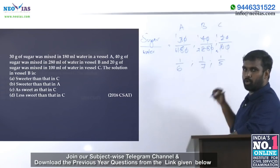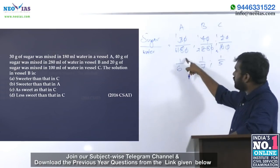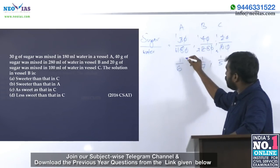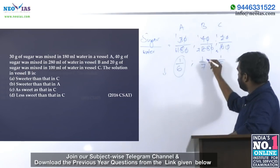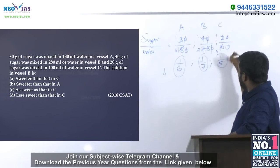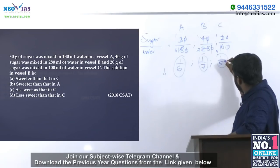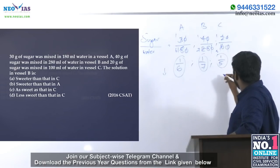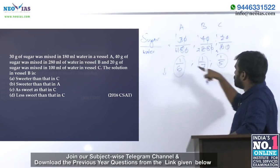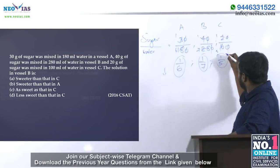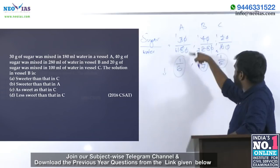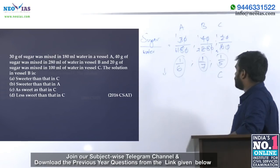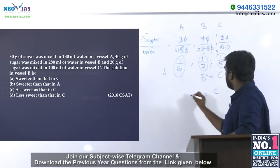The numerators are all the same — only the denominators differ. If the denominator increases, the value decreases. So if the denominator is less, there is more sugar relative to water. C has denominator 5, which is the smallest, meaning C has the most sugar per unit of water and is the sweetest. A is sweeter than B since 6 is less than 7.